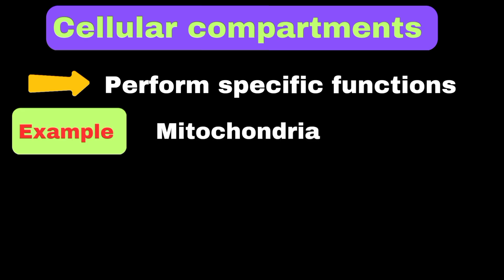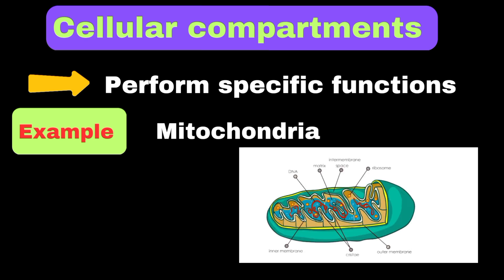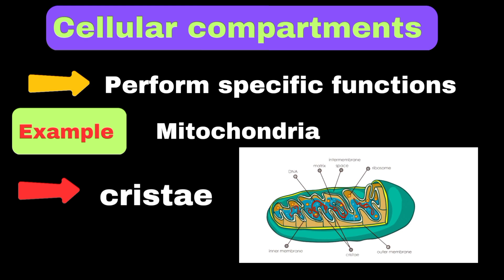Cellular compartments are specialized areas within the cell that perform specific functions. For example, mitochondria, often called the powerhouse of the cell, have a unique structure with folded inner membranes called cristae, where energy production takes place. Here, glucose is broken down through cellular respiration to produce ATP molecules.